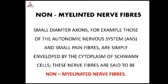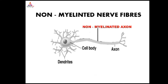Non-myelinated nerve fibers have small diameter axons — for example, those of the autonomic nervous system and small pain fibers — and are simply enveloped by the cytoplasm of Schwann cells. These are said to be non-myelinated nerve fibers.